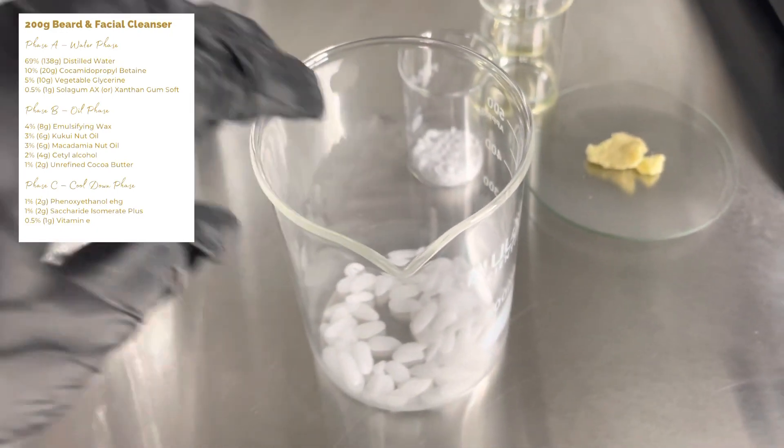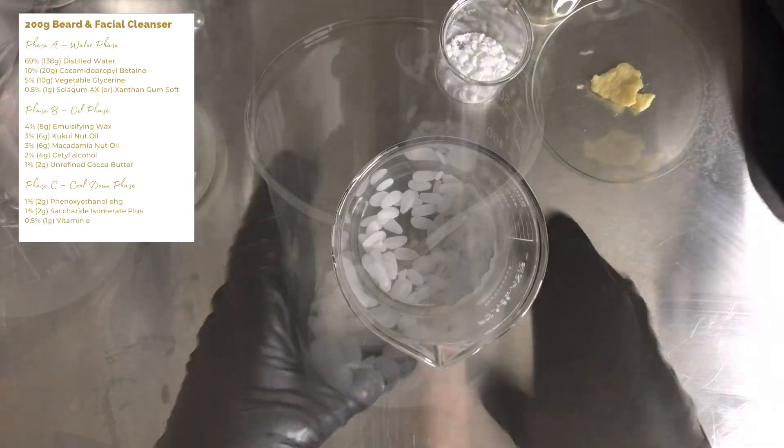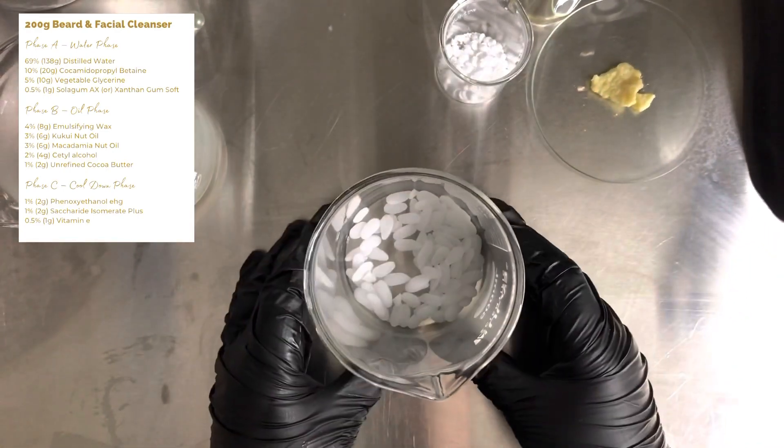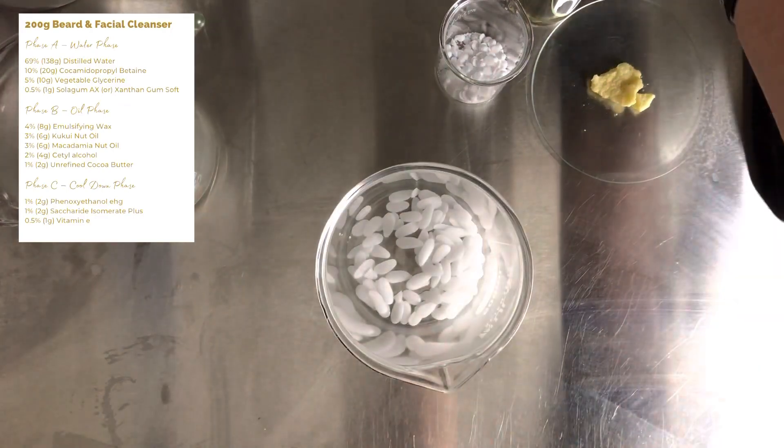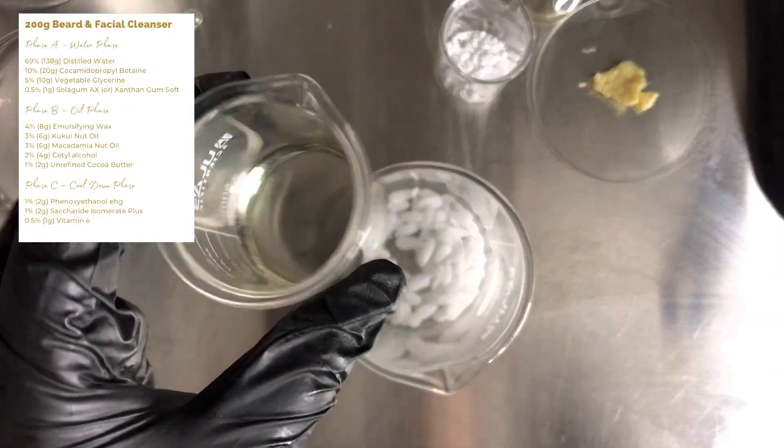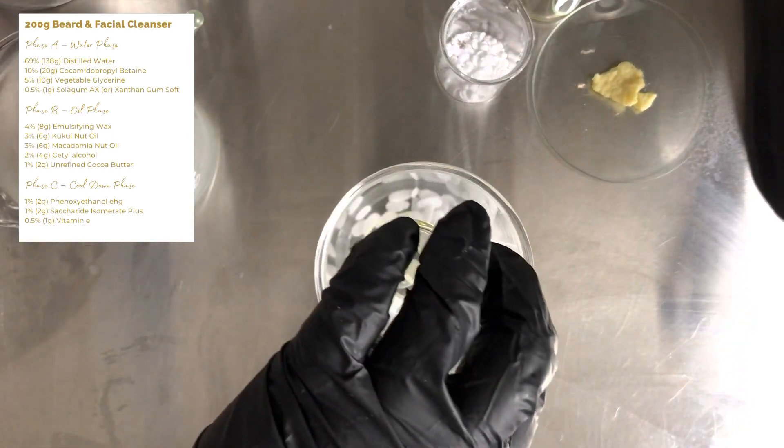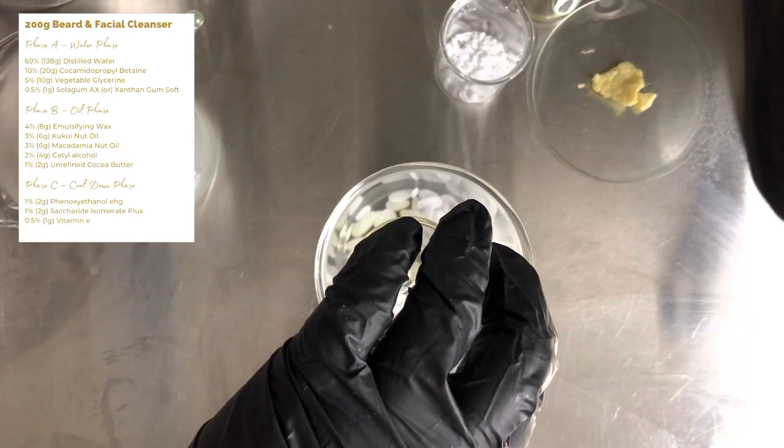Then we move on to the oil phase and this is emulsifying wax. I get mine from Maker's Ingredients, so this is a combination of cetearyl alcohol and sodium lauryl sulfate. If you want to avoid sodium lauryl sulfate, there are other emulsifying waxes available.